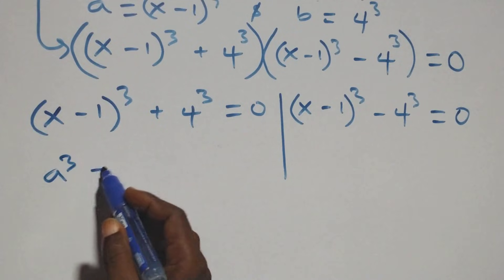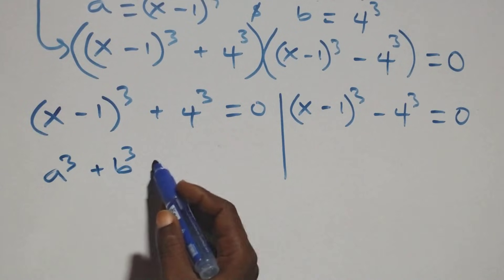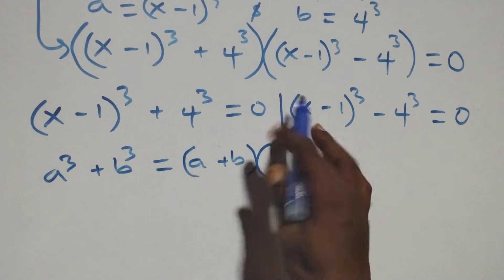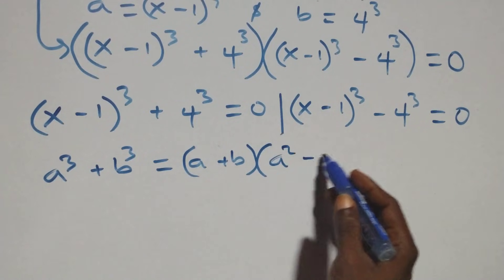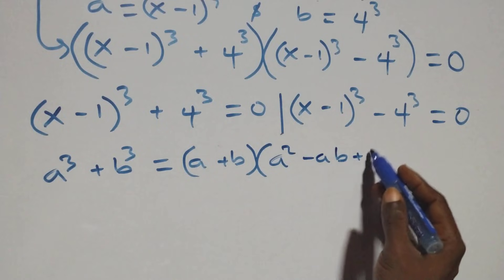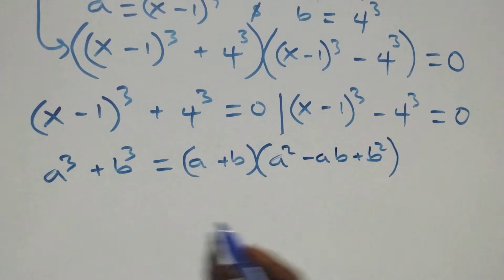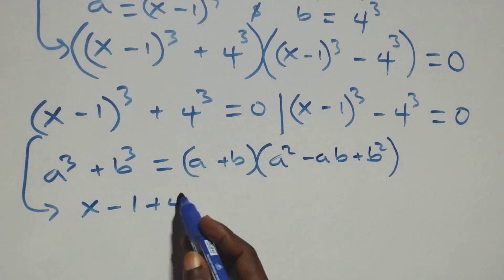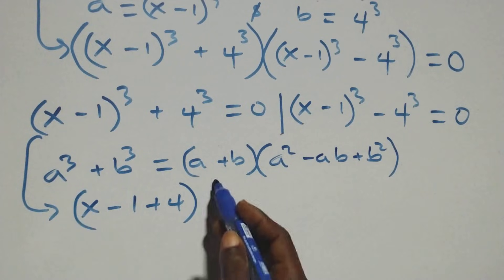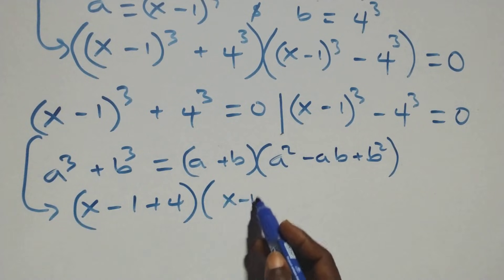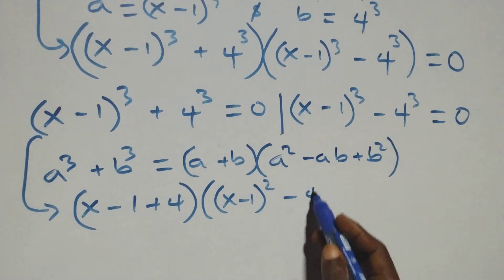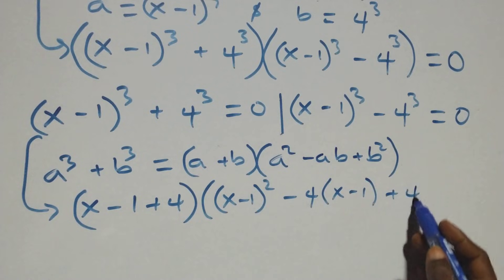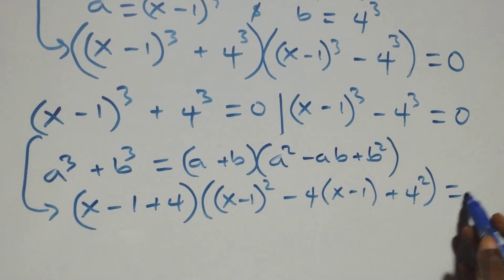Solving the first case: we have a³ plus b³, which is the same as (a plus b) times (a squared minus ab plus b squared). Applying this, we get (x minus 1 plus 4) times [(x minus 1) squared minus 4 times (x minus 1) plus 4 squared] equals 0.